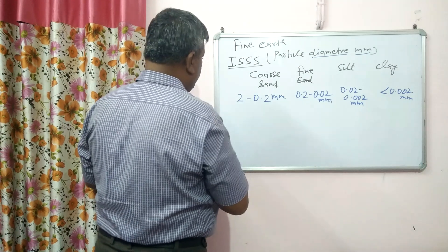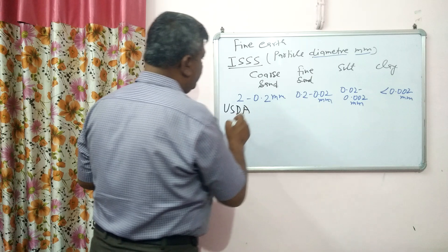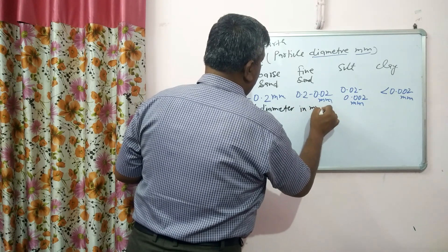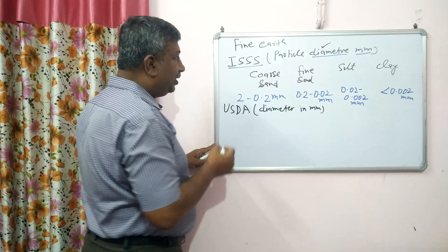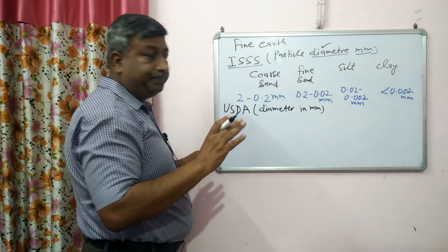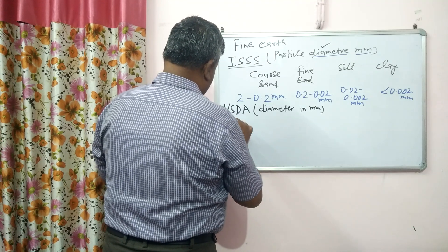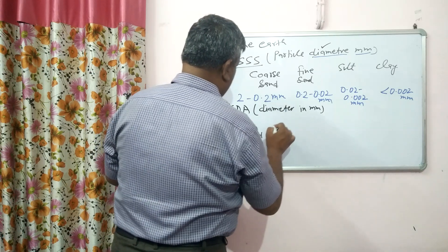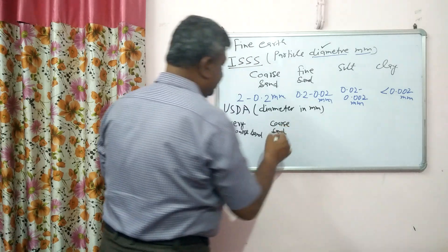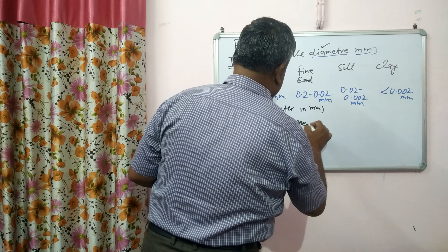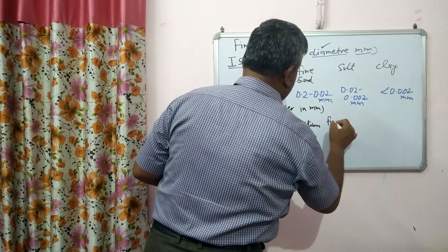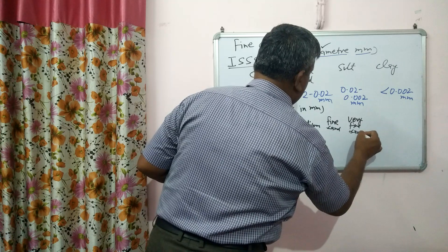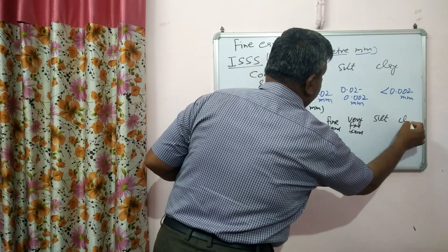Another system is the USDA system. In the USDA system, particle diameter is also measured in millimeters. But here, sand is divided into 5 groups: very coarse sand, coarse sand, medium sand, fine sand, and very fine sand. Then silt, and lastly clay.